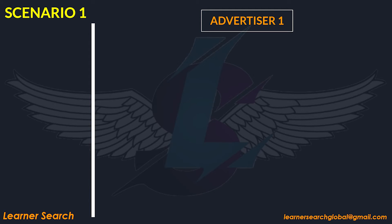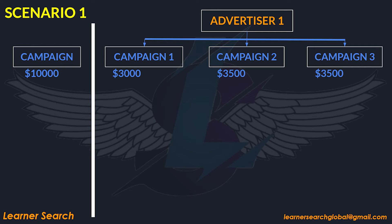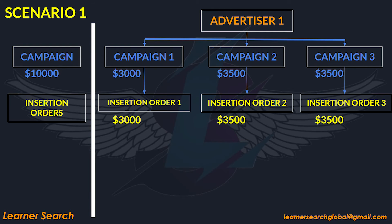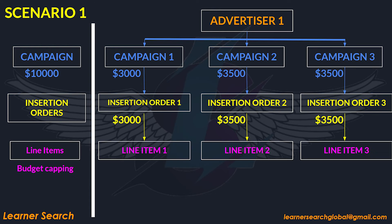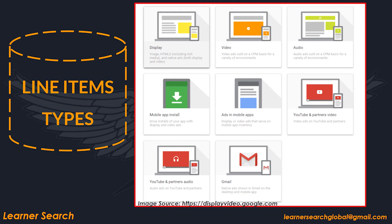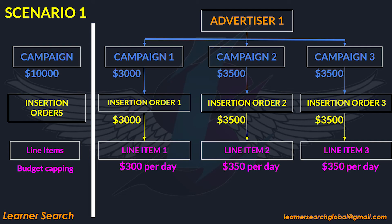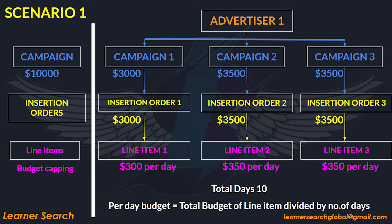As per the media plan budget details, we shall create a separate campaign for each media type. Under each advertiser, we can create three campaigns with budgets allocated to each media type. Under each campaign, we can create a new IO and the same budget flows to it. Under each IO, we shall create a single line item, and the budget for these line items flows from their respective IOs. Remember, different media types cannot be added under a single line item — for example, display and video creatives cannot be added to a single line item. So we have to create separate line items for each media type. Here, we have given a daily budget for each line item. To calculate daily budget: total budget divided by total campaign flight days. Daily budget for each line item is as shown in the figure.